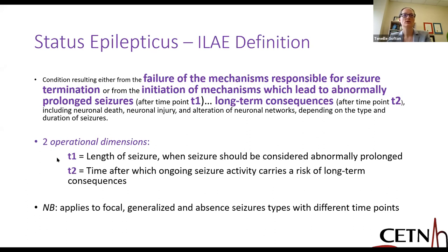There's T1, which reflects the length of the seizure. In different types of seizures, this will be at different times, but after T1, seizures are considered to be abnormally prolonged. And then there's T2, after which ongoing seizure activity really leads to long-term damage. Today I'll be focusing on convulsive and then non-convulsive comatose-associated electroconvulsive seizures.